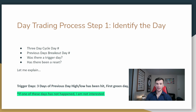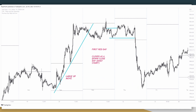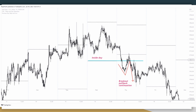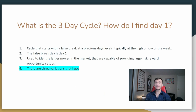Has the previous day high been hit twice? Has the previous day's low been hit twice? Was there a trigger day, and has there been a reset? My three triggers are two or three days of the previous day's level — either the high or the low being hit — first green day or first red day, or inside day. And if one of those days hasn't happened on the previous day, then on the current day I'm not looking at that pair at all. What is the three day cycle and how do I find day one? Finding day one is probably the most important part because you have to identify day one to be able to identify day two and three.